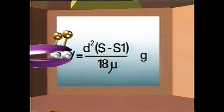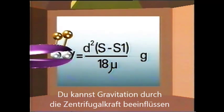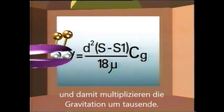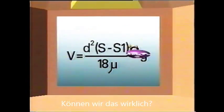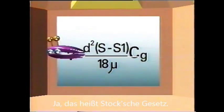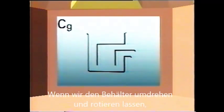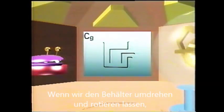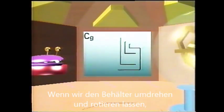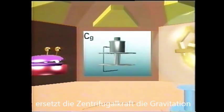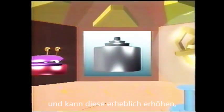What about G? Surely that's constant. Gravity is, yes. But you can replace gravity with centrifugal force, and so multiply G by thousands of times. This is called Stokes' Law.